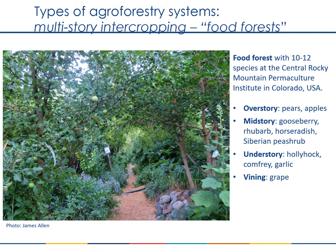Food forests are very complex multi-species systems, often with multiple architectural layers mimicking natural forests. Here is an example from a high elevation site in the Rocky Mountains in the U.S., with an overstory of pear and apple trees, a midstory layer of gooseberries, rhubarb, horseradish, and Siberian pea shrub, and an understory of hollyhock, comfrey, and garlic, with grapevines linking between the different layers. These systems make use of every resource niche for high density production and high rates of recycling of materials. Due to their structural complexity, they tend to rely on hand labor and are not suited to large equipment of industrialized agriculture, so in temperate regions they are more often seen in the context of home gardens or community gardens.